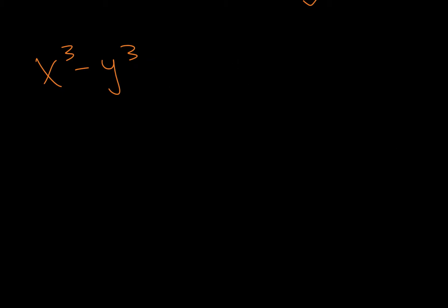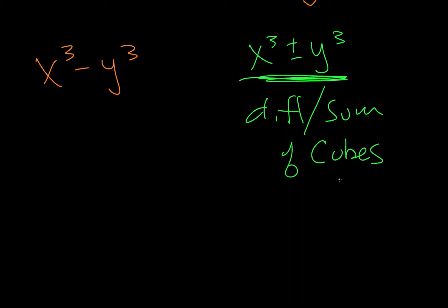So, when we're doing this, we have x cubed minus y cubed. So we need to have something cubed plus or minus something cubed. That's how we know we can use this method. So it's difference or sum of cubes. We have something cubed minus something cubed, so we can use this method.